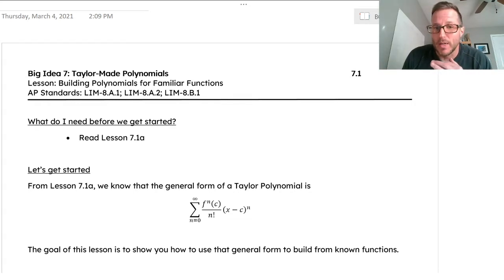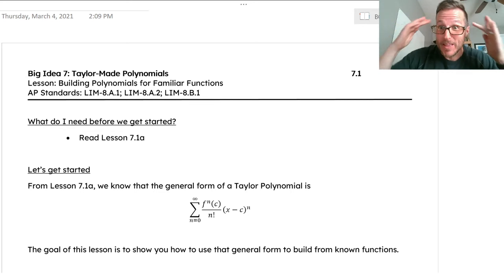The idea of turning a function like e to the x or sine or cosine into a polynomial was something that was necessary back in the day. It might not be necessary now, but it's totally freaking rad that you can turn e to the x into an infinitely long polynomial. It blows my mind every year. It becomes radder and radder.